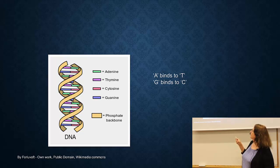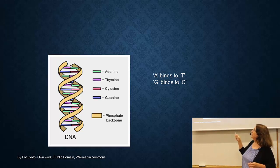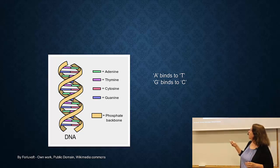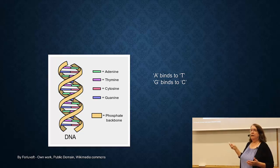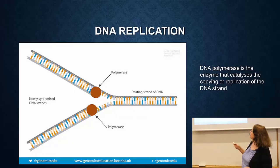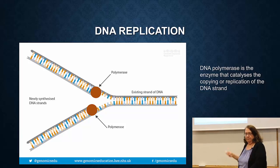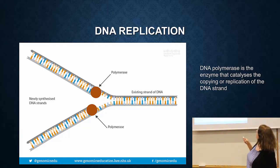DNA is a double-stranded helix which has different base pairs that match together. A always goes with T — adenine always with thymine — and cytosine with guanine. The beauty of this molecule is that if you unzip it like a zipper, then if there's a guanine on the left side, the replication machinery should put a cytosine in to make a copy. Here's the existing strand of DNA — it unzips, and DNA polymerase makes a copy of the complementary strand.